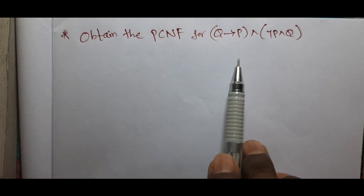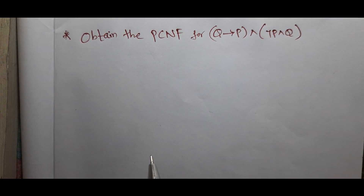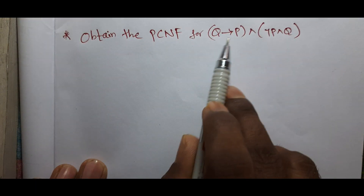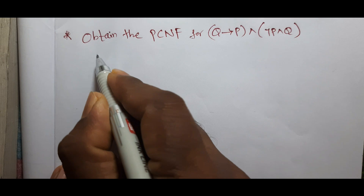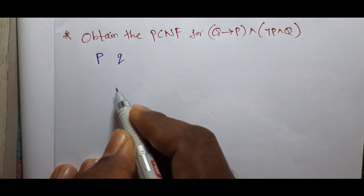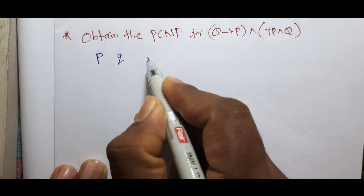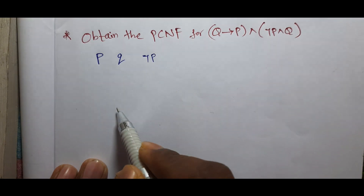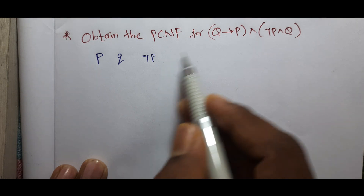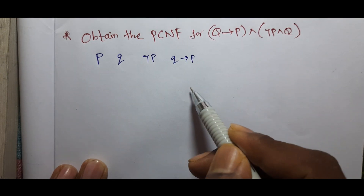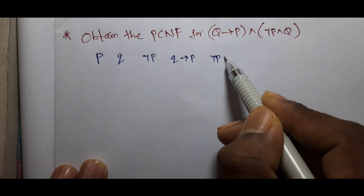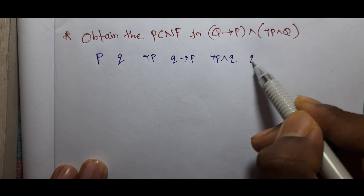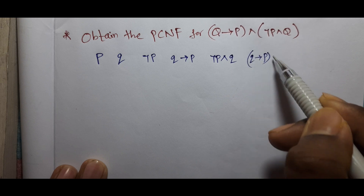I have to check our PCNF table. Now, we have two propositions here: P and Q.